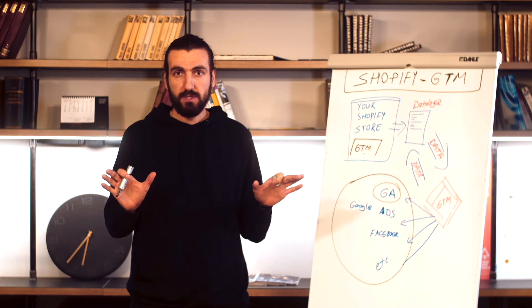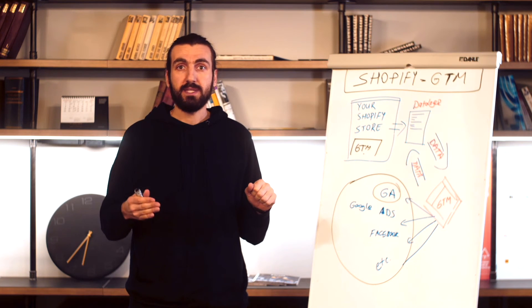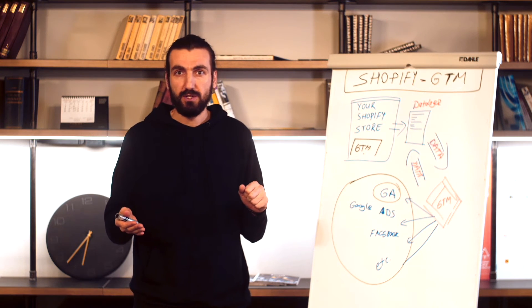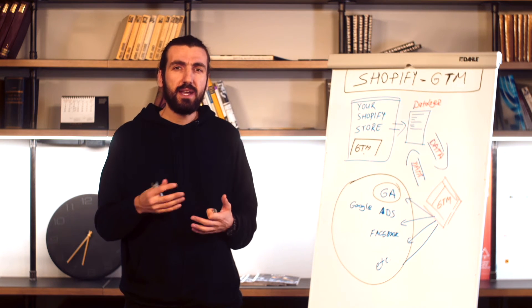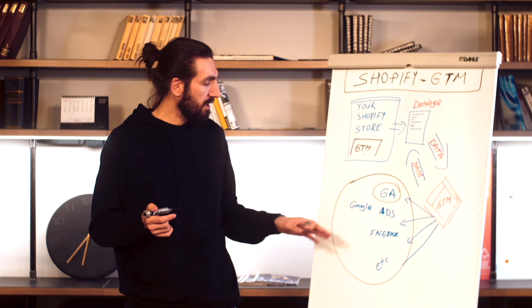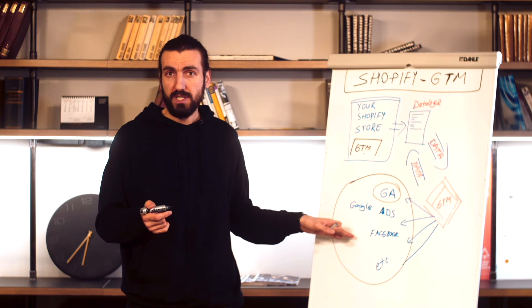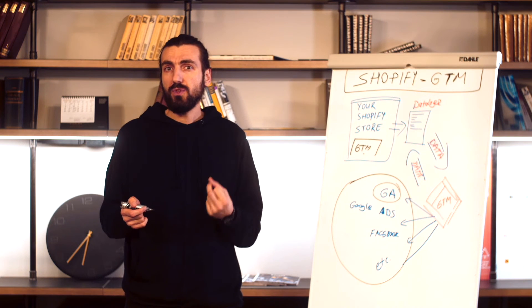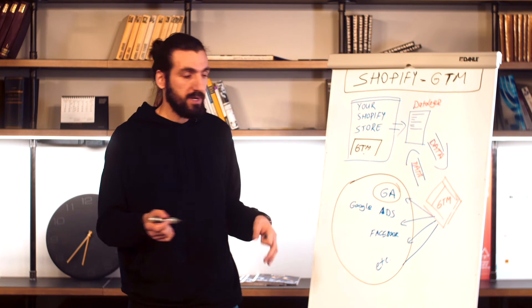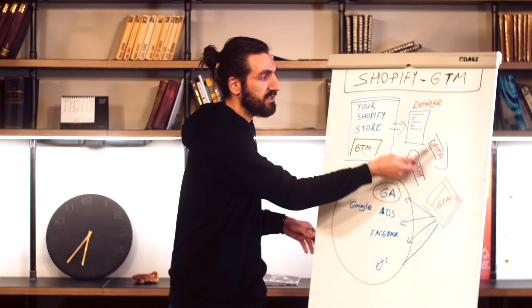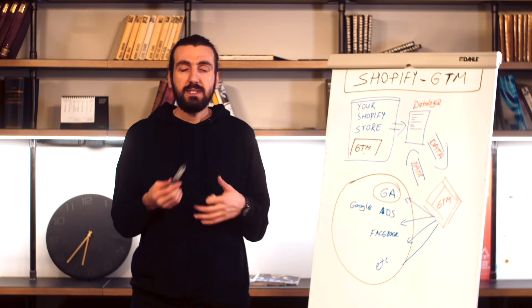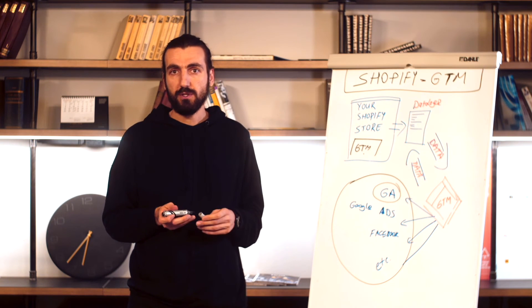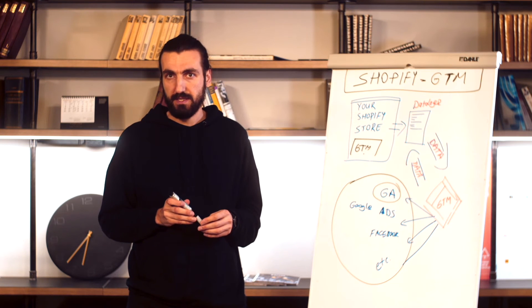If all this confuses you, don't worry, we are going to do all of them step by step in the following sections of these courses. And each of these tags will need different variables inside. For example, Facebook Pixel Purchase Tracking Tag will want to know the revenue. What will happen is, GTM will go and read the revenue from the data layer and push it to the Facebook Pixel. This is how Google Tag Manager works with the marketing and tracking pixels.